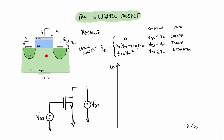Over here on the left, we have the n-channel MOSFET, or the nMOS for short. We know that when we put a voltage at the gate, it induces a channel that causes a continuous path for current to flow from drain to source. However, as we increase the value of the drain voltage, the shape of this channel changes from rectangular to trapezoidal, and finally to a triangular shape with pinch-off. Those ideas led to different equations for drain current.